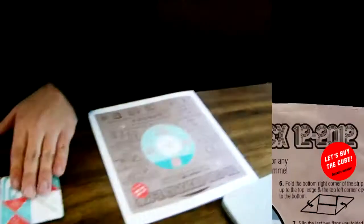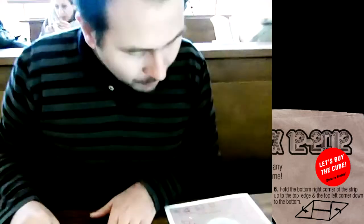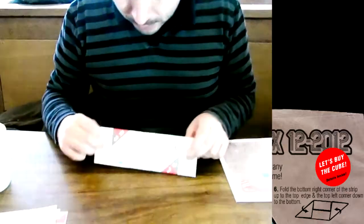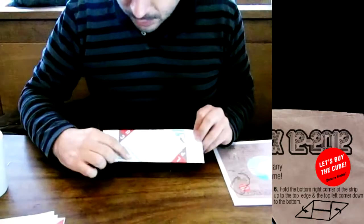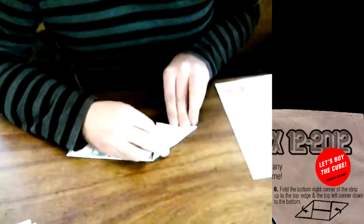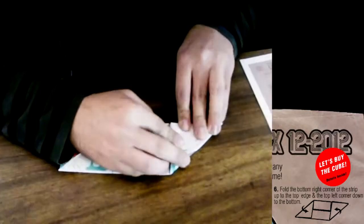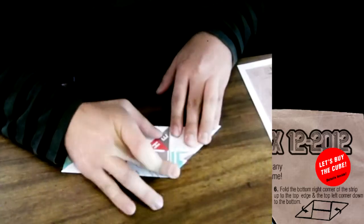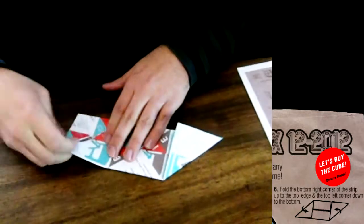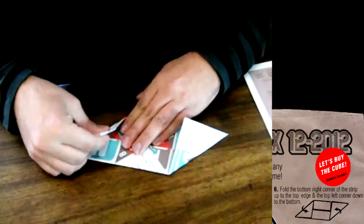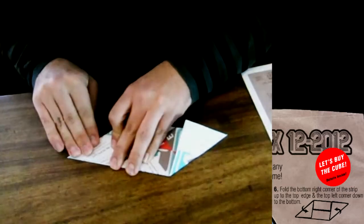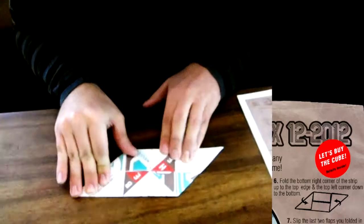And what does it say? Fold the bottom right corner into the strip of the top edge and the top left corner down to the bottom. So, let's see. There's some guides here. So we can hold this one down here. Slip under. Need to be up. It's getting thicker.